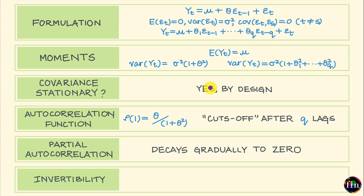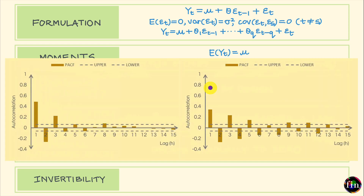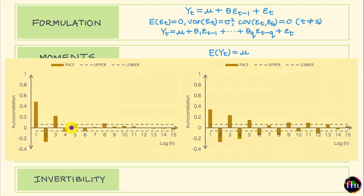Looking at example plots for MA1 and MA2, for both models the partial autocorrelations are decaying down to zero with an oscillatory profile. The decay is not abrupt; it is a gradual decay to zero as the lag keeps increasing.